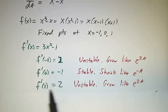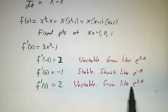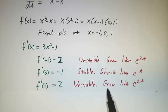Near 1, f' is 2. That's unstable. Things grow like e^(2t). And when I say things, I mean y. I mean the displacement from the fixed point.